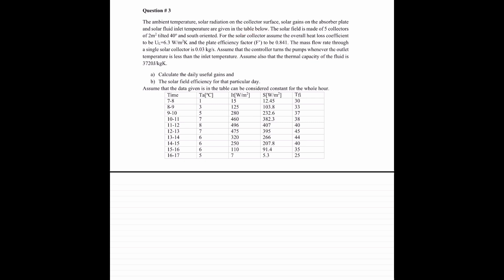The solar field is made of five collectors of 2 m² tilted 40 degrees and south-oriented. For the solar collector, assume the overall heat loss coefficient to be 6.3, and the plate efficiency factor to be 0.841.